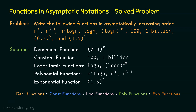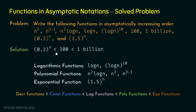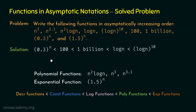Now let's place these functions in asymptotically increasing order. First comes 0.3^n. Then constant functions: 100 is less than 1 billion, so 100 comes before 1 billion. Then logarithmic functions: log n is less than log n^10 because log n^10 is log n multiplied by itself 10 times. So far: 0.3^n < 100 < 1 billion < log n < log n^10.